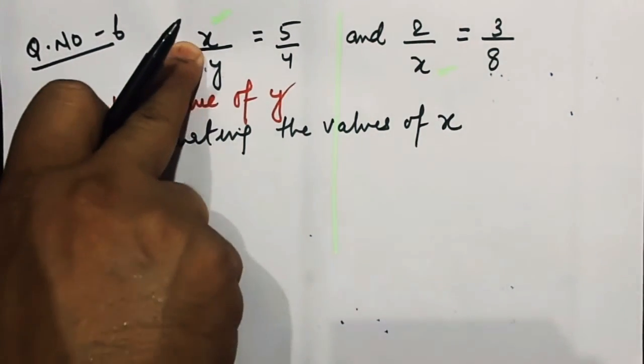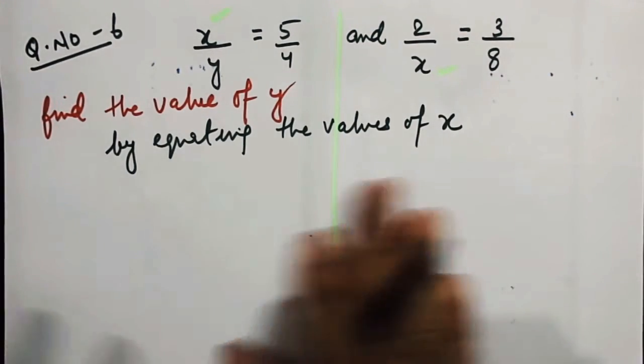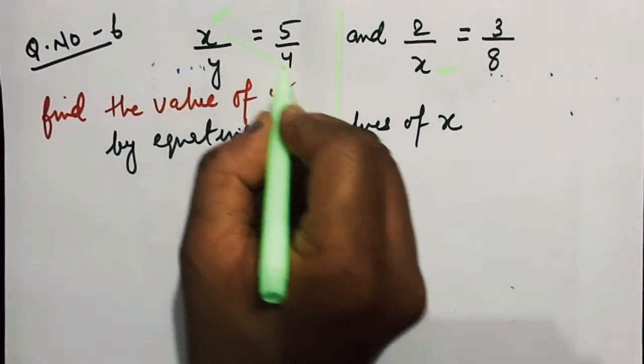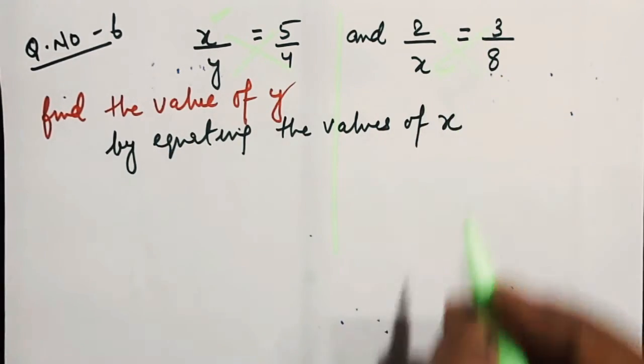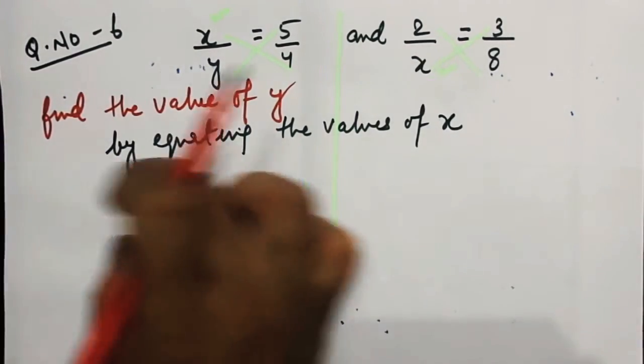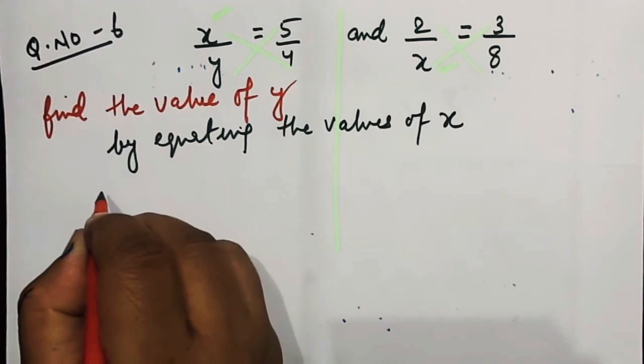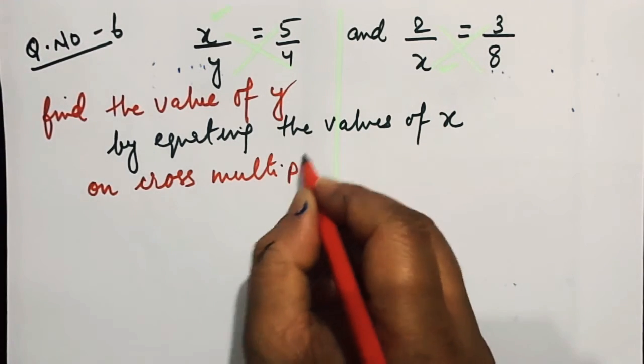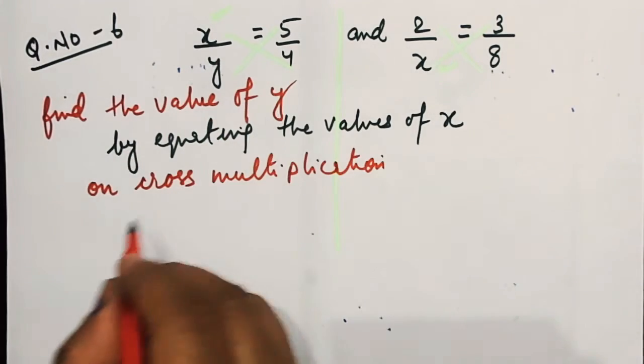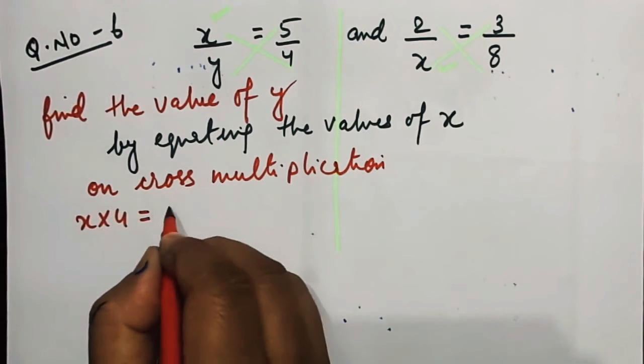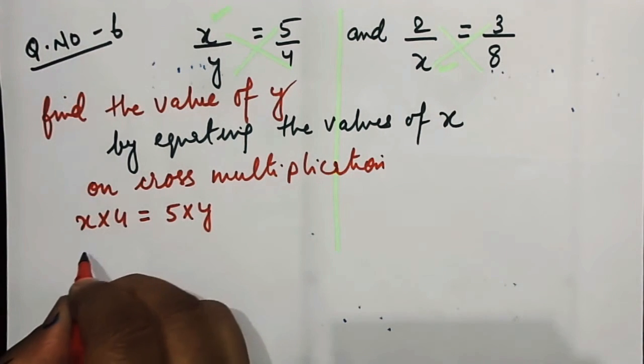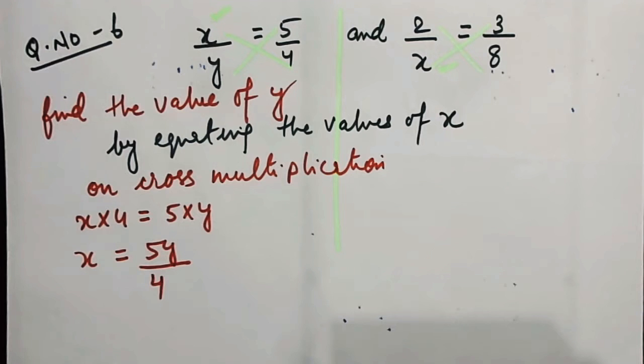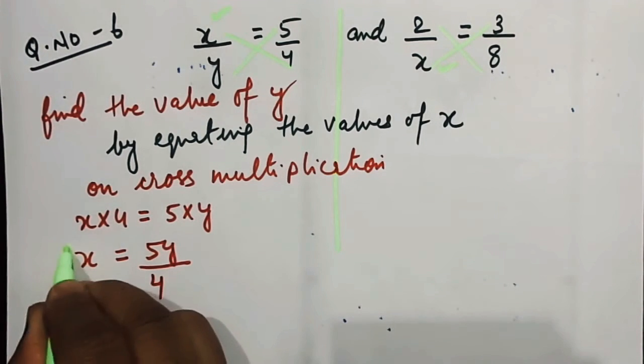We are going to find the value of x here also, x here also, and then we will equate it. What we need to do, let's cross multiply. On cross multiplication, x into 4 will be equal to 5 into y, or the value of x will be equal to 5y by 4.